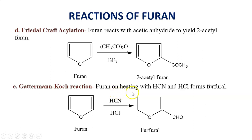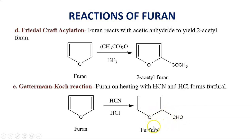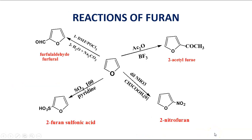The Gattermann-Koch reaction: furan on heating with hydrogen cyanide (HCN) and HCl forms furfural, where the aldehyde group is attached at the second position — furan with an aldehyde group is called furfural. To summarize the electrophilic substitution reactions: furan on acetylation gives 2-acetylfuran, on nitration gives 2-nitrofuran, on sulfonation gives 2-furansulfonic acid, and on the Gattermann-Koch reaction gives furfural.